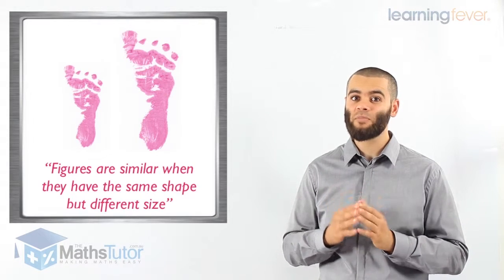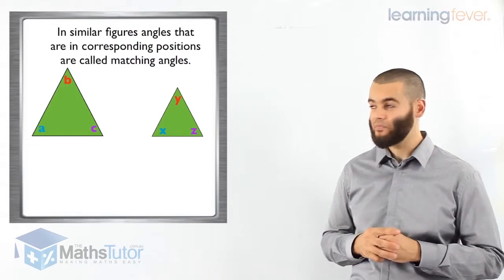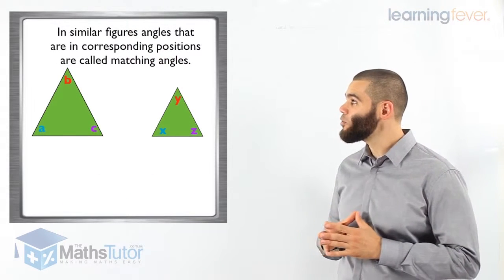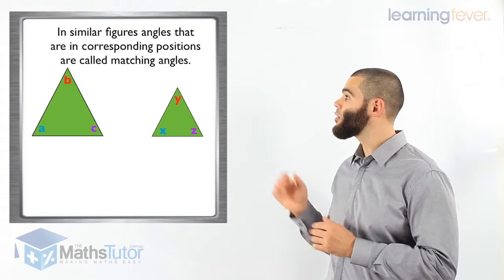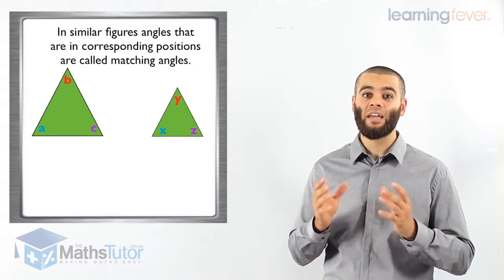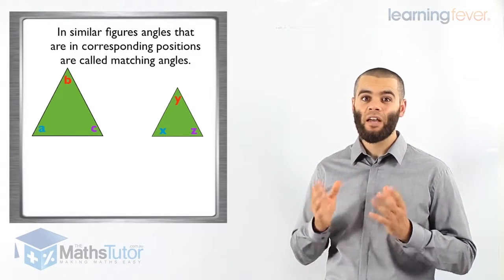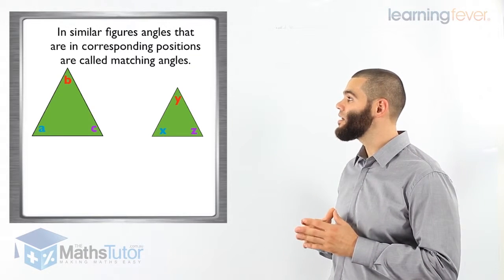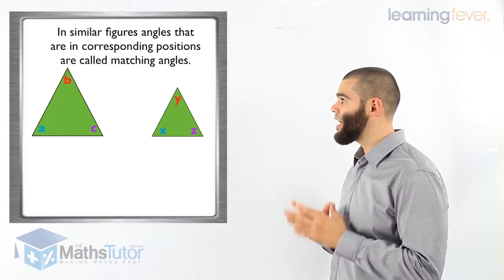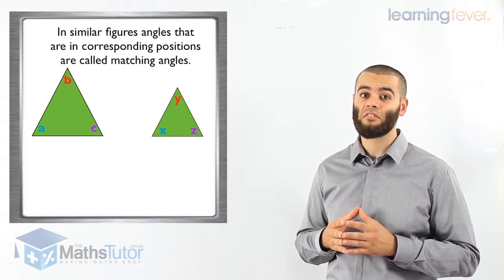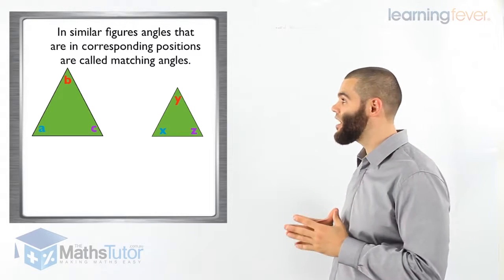Now let's look at some more concepts that we can understand regarding similar figures. Angles that are in corresponding positions are called matching angles. We can see here in these two similar figures — we have these two triangles. They are similar figures. How do we know? They have the same shape but different size.